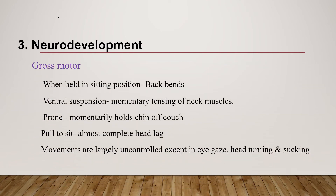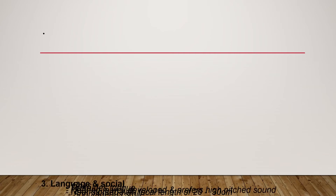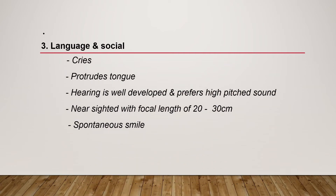Regarding neurodevelopment in the first two months — gross motor: the back bends when held in sitting position, momentary tension of neck muscles occurs at ventral suspension, they momentarily hold the chin off the surface in prone position, and there is almost complete head lag when pulled to sit. Movements are largely uncontrolled except in eye gaze, head turning, and sucking. Fine motor is not developed at this age. Regarding language and social development: they cry, protrude the tongue, hearing is well developed, and they prefer high-pitched sounds. They are nearsighted with focal length of 20 to 30 centimeters, and spontaneous smiling is present.